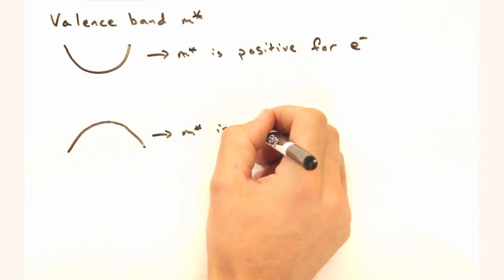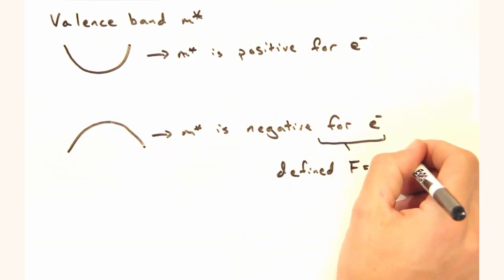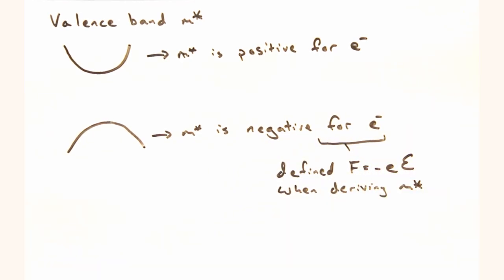Okay. So let's start with the effective mass of electrons in the valence band. So we'll still assume a parabola, except this one is pointed downward. So the double derivative will be negative.